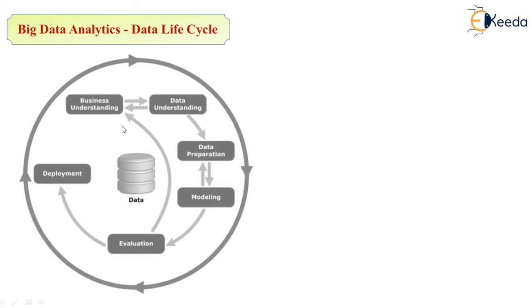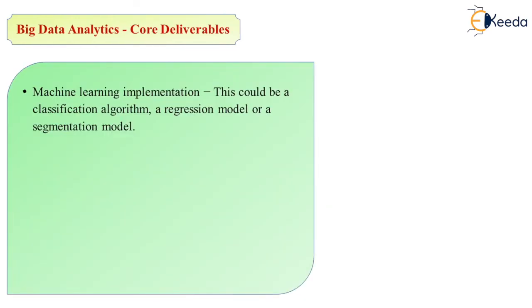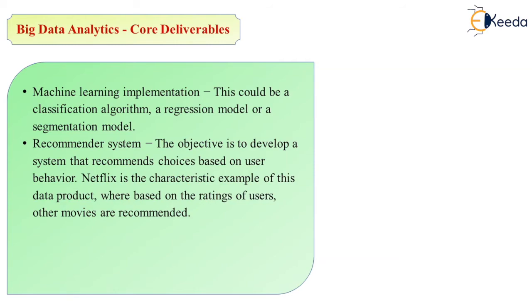Big data analytics core deliverables. What we are going to deliver to the customer. Number one: machine learning implementations. This could be a classification algorithm, regression model, or segmentation model. Recommendation. The objective is to develop a system that recommends choices based on user behavior. Netflix is the characteristic example of this data product. Suppose you are watching a movie. Based on that, you will be recommended which movie should be watched next time based on your likes, your interests, your favorite director.